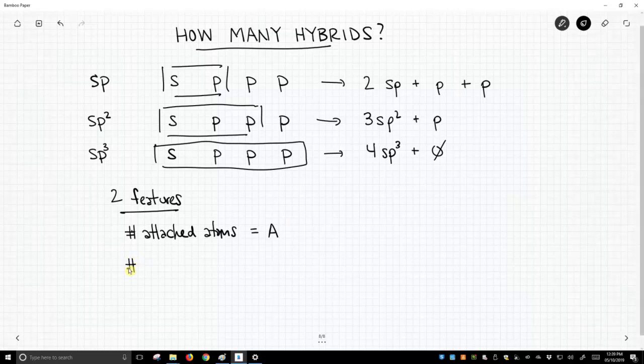The other feature that we might be interested in is the number of lone pairs on our atom. Now we're gonna call that L. So again, I haven't answered the question. How many hybrids do we need?